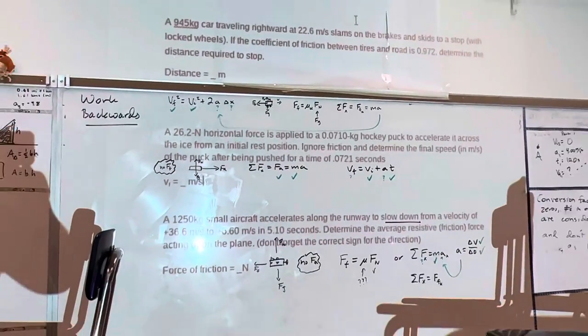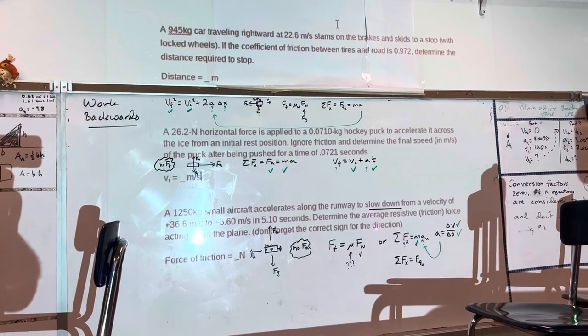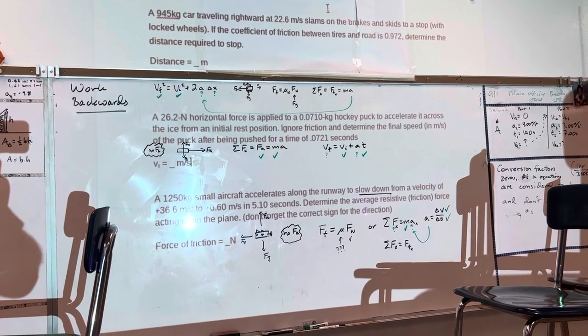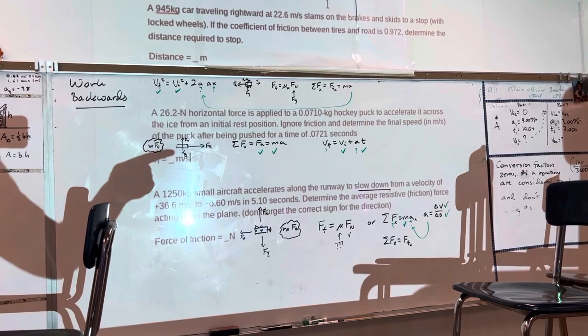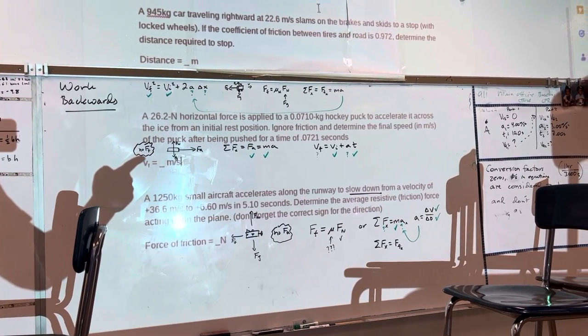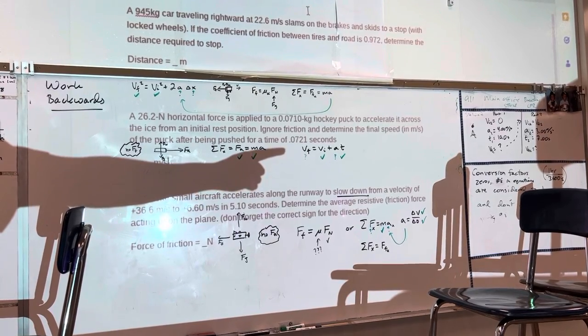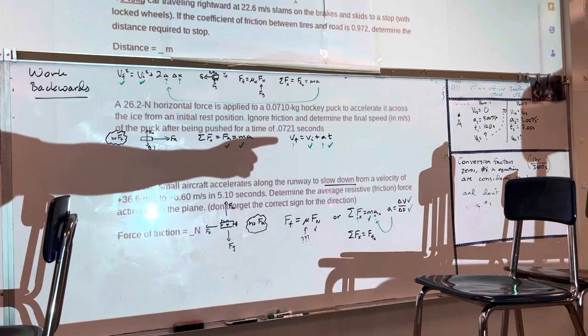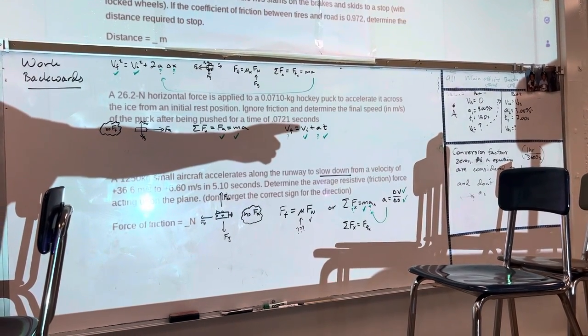We've got an ice hockey puck. We know the force that's being applied to it. We know there's no friction. And we want to figure out the final velocity. So to figure out the final velocity, we need the initial velocity, acceleration, and time.